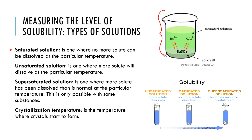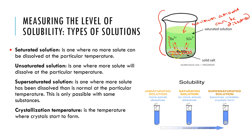A saturated solution is one where no more solute can be dissolved at a particular temperature. The diagram shows solid salt at the bottom, with arrows indicating that as some comes out of solution, the same amount dissolves back in. Because the solution holds the maximum amount it can, any additional solute just falls to the bottom. The concentration in a saturated solution remains constant — you physically can't fit any more solute into the solvent.